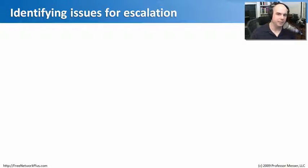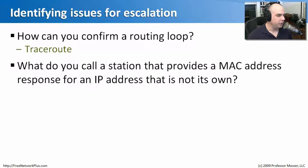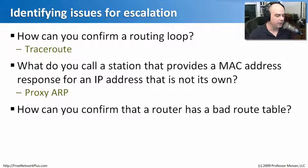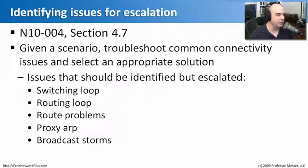Let's review what we've learned about escalating major network issues. To confirm a routing loop, you run a traceroute and watch the path go from A to B to A to B repeatedly. A station that provides a MAC address response for an IP address that isn't its own is called a proxy ARP, and we can look at our ARP table to determine if that's occurring. To confirm a bad routing table, use traceroute to see where the route goes wrong, then provide that information up to whoever manages the routes to solve the problem.